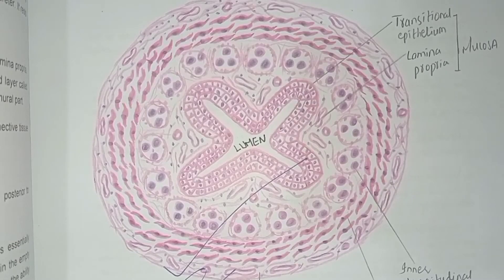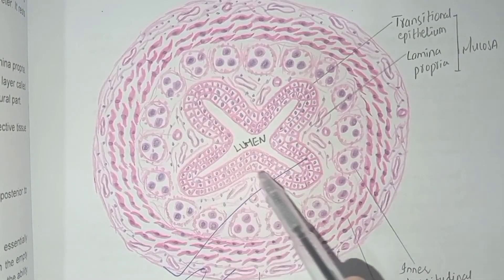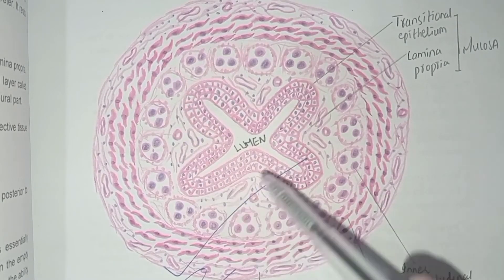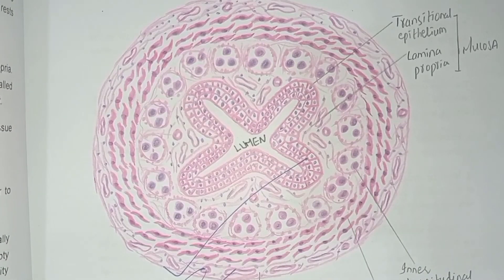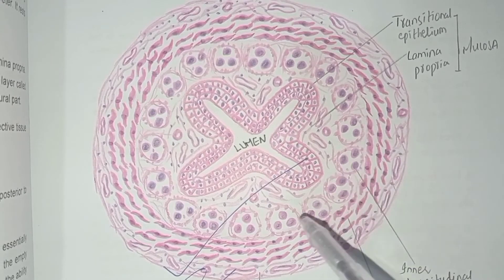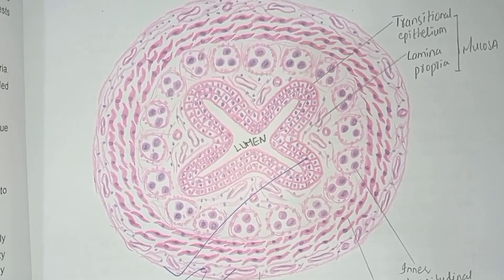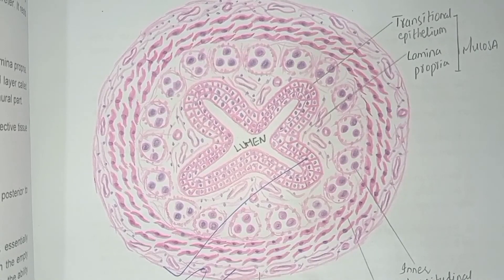This is the ureter diagram. We can see the star-shaped lumen lined by transitional epithelium. After that is the lamina propria. The muscularis mucosa is absent. Just external to the lamina propria is the muscularis layer. In this histological diagram showing the upper two thirds of the ureter, the muscularis has an inner longitudinal layer and an outer circular smooth muscle layer.